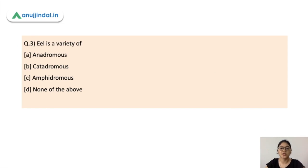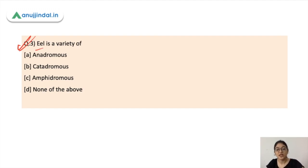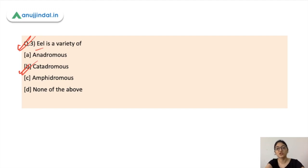The next sub-question is: Eel is a variety of which type? The options are Anadromous, Catadromous, Amphidromous, and none of the above. The correct answer is Catadromous. Eels move from rivers to sea water to lay their eggs.